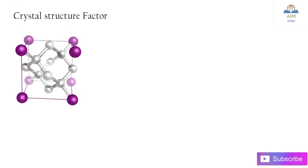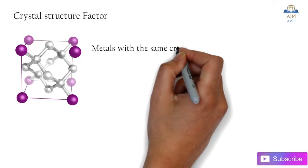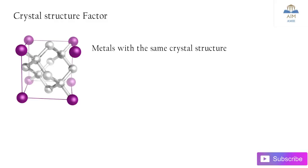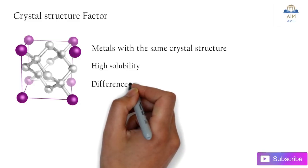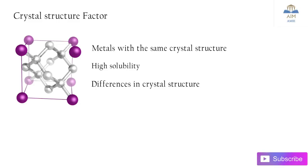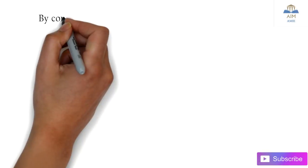Next is the crystal structure. Apart from atomic structure, the crystal structure matters. Metals with the same crystal structure tend to have high solubility, whereas metals with different crystal structure will have limited solubility.